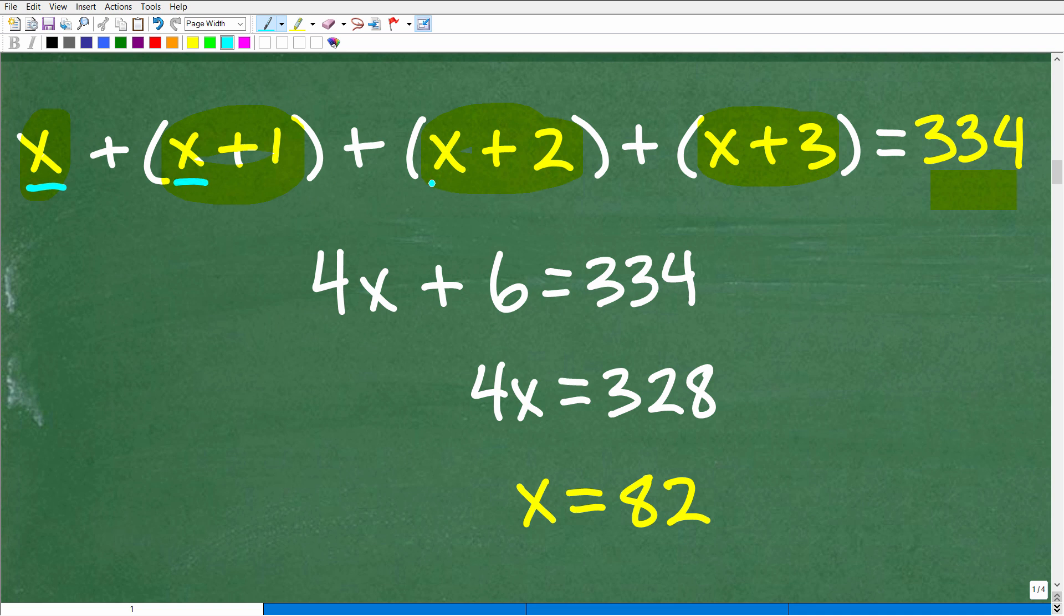So we have x, x, x, and x. That's 4x. So 4x's. Then we have 1 and 2 and 3. That gives us 6. So we're just doing some basic algebra here. So let's solve for x. What we need to do now is subtract 6 from both sides of the equation. I get 4x is equal to 328. And now I divide both sides of the equation by 4. I get x is equal to 82.